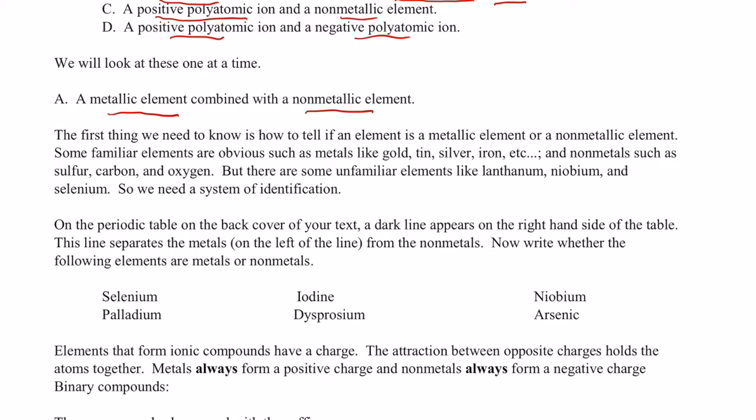So the first thing we need to know how to do is to tell if an atom is a metal or a nonmetal. Now, we did this earlier in the year, but we're going to review it. Some familiar elements are obvious, like gold, tin, silver, iron, and nonmetals like sulfur, carbon, and oxygen are obvious. But there are some unfamiliar elements, like lanthanum, niobium, and selenium. We don't know whether they're metals or nonmetals. So if you remember, we need a system to identify them.